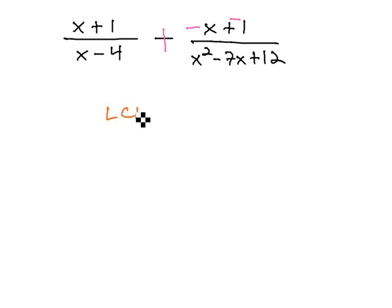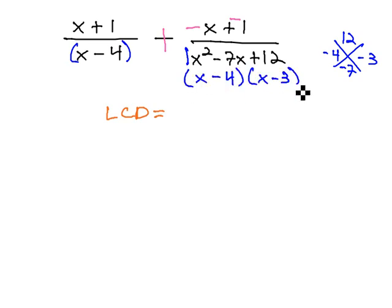Now, we're ready to find the LCD by identifying the factors of our denominators. The first denominator doesn't factor, but the second one, multiplying to 12 and adding to negative 7, we'll factor with the negative 4 and negative 3. We have a 1 in front of the x squared, so we can jump right to the factors of x minus 4, x minus 3.